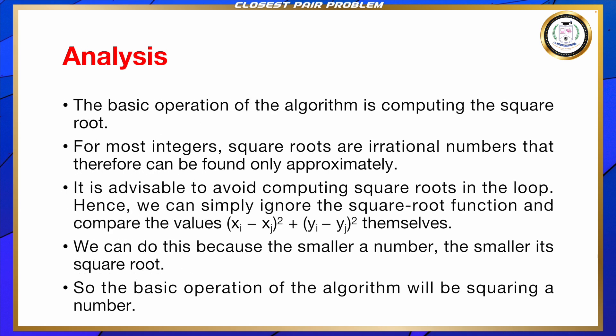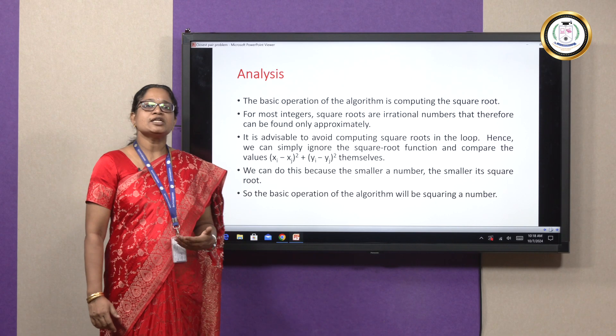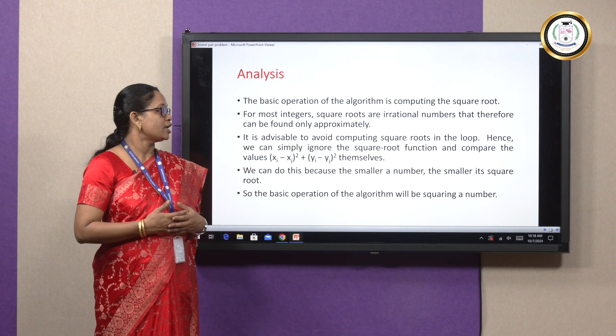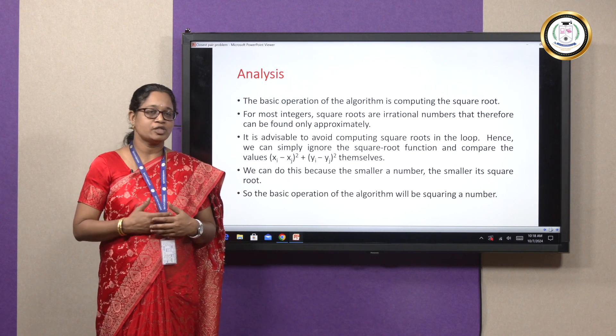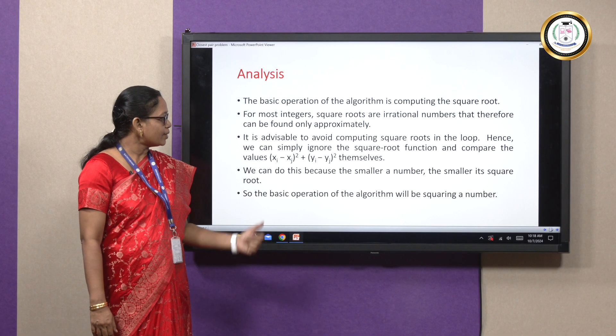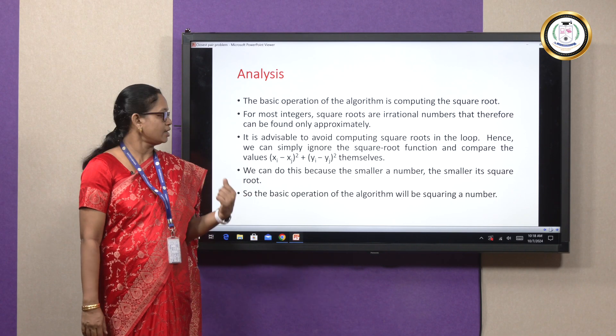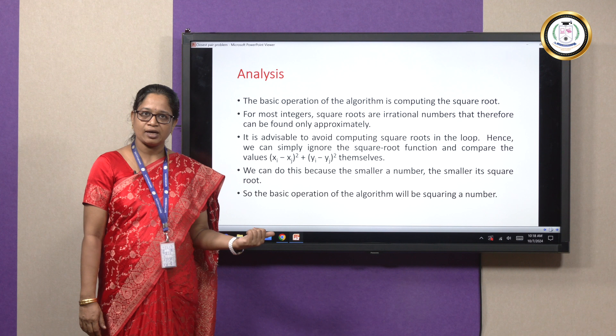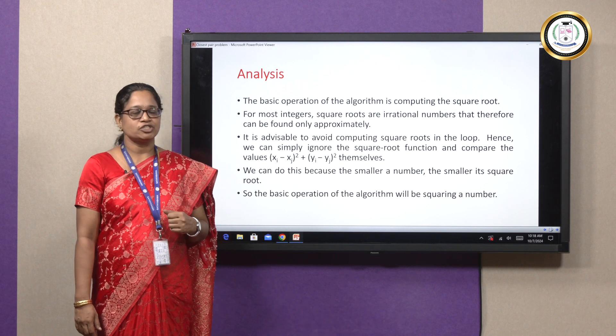Let us come to the analysis part. In this algorithm the basic operation we are going to do is finding the square root. But for most integers square roots are irrational numbers and that can be found only approximately. It is advisable to avoid computing square roots inside the loop and hence we ignore the square root function and compare the values just like that: (xi - xj)² + (yi - yj)².